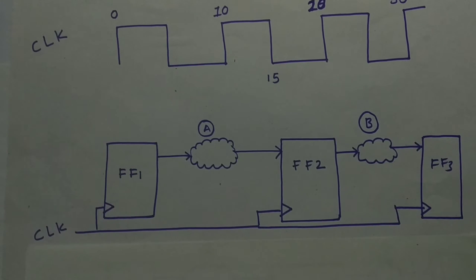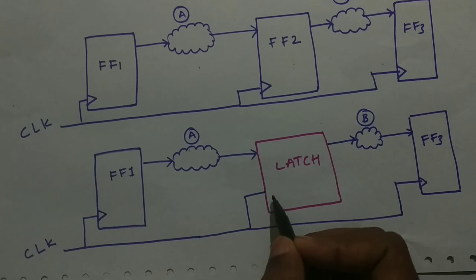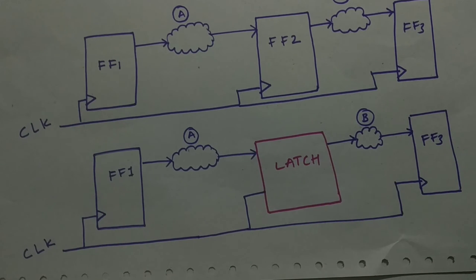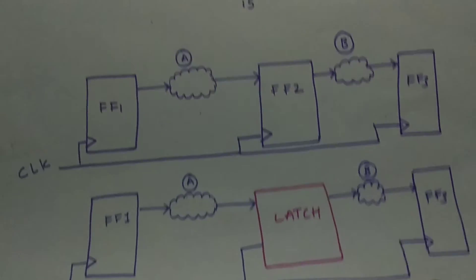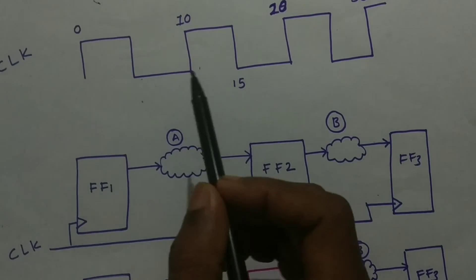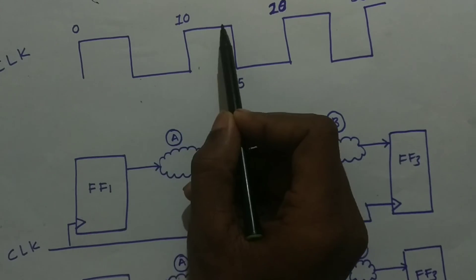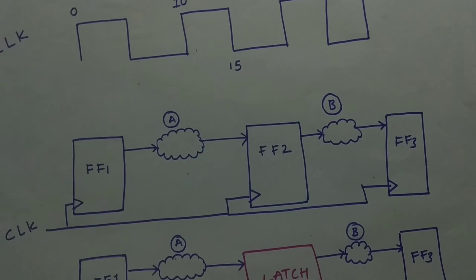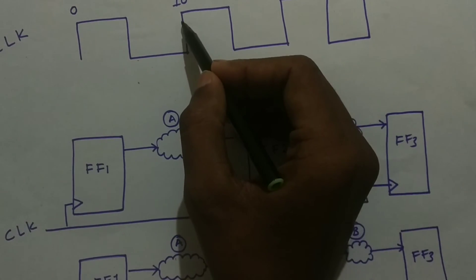To avoid this problem we can use a latch. Instead of using flip-flop 2, we use a positive level-sensitive latch. That means whenever the clock is high, the latch will work for half a period of time. So if the clock gets enabled at 10, the latch will be transparent from 10 to 15, whereas a flip-flop is transparent only at the clock edge.